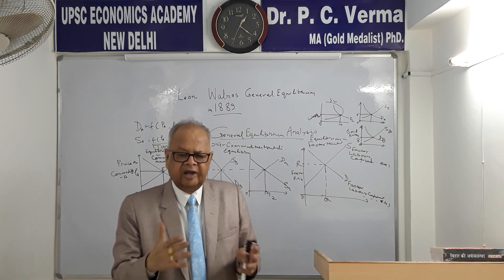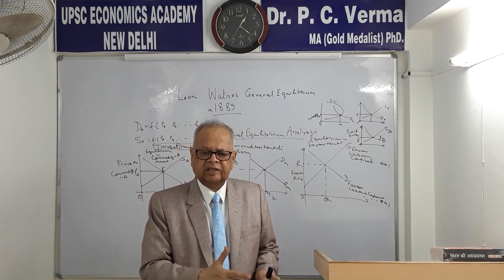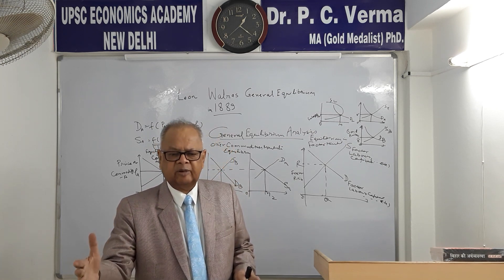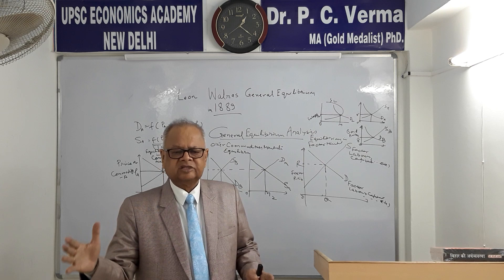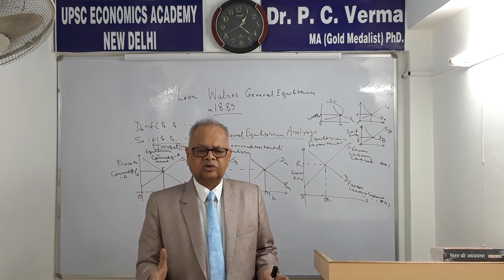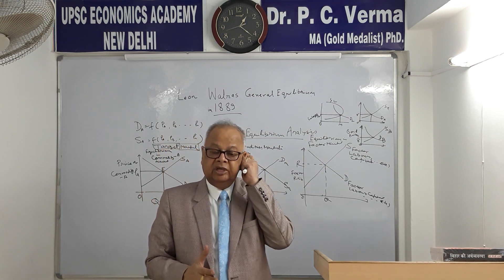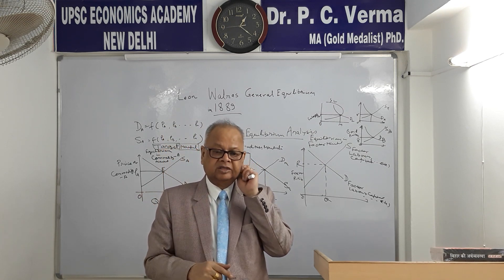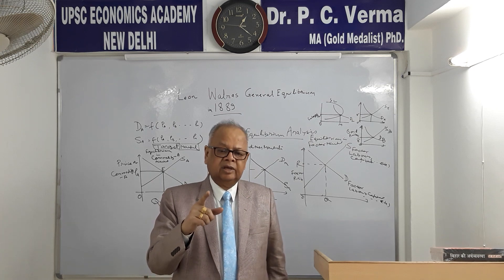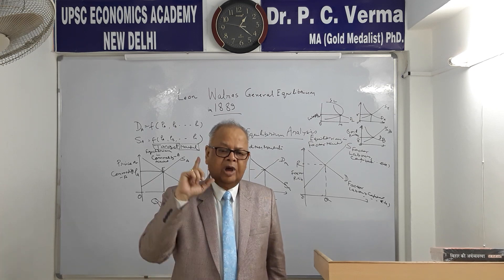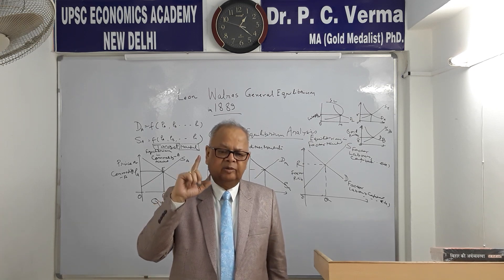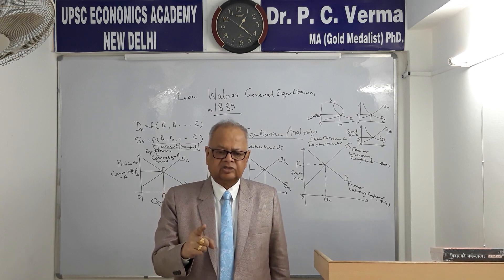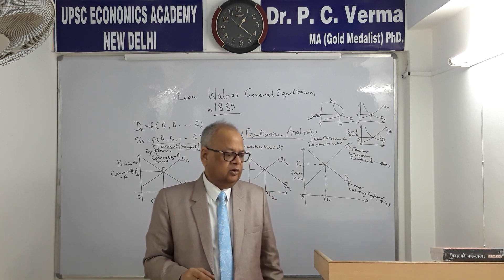Then we can find out: higher the price, lower the demand; lower the price, higher the demand — other things remaining constant. Marshallian approach is partial equilibrium analysis, whereas Walrasian equilibrium is general equilibrium analysis. That's all. Thank you.